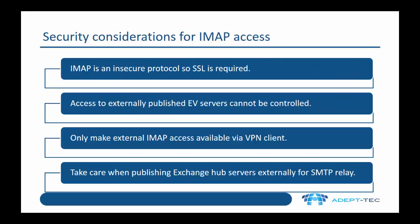There are a number of security considerations for IMAP access. First, as already mentioned, IMAP is an inherently insecure protocol, so SSL is required. The second point is very important: access to externally published EV servers cannot be controlled. So once a user has been configured for IMAP access, if they have access on the internet, they can actually configure an IMAP profile on any client — on their home tablet or their personal mobile — and you cannot control that.